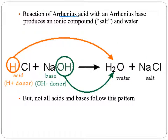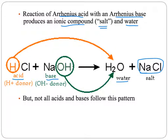The reaction of an Arrhenius acid with an Arrhenius base produces an ionic compound — the old-fashioned word for that is salt — and water. So if we have hydrochloric acid as our Arrhenius acid reacting with sodium hydroxide as our Arrhenius base, it makes water and sodium chloride. This will actually be sodium ions and chloride ions in solution because it's in water, but you could evaporate the water and leave the sodium chloride — leave the salt behind.